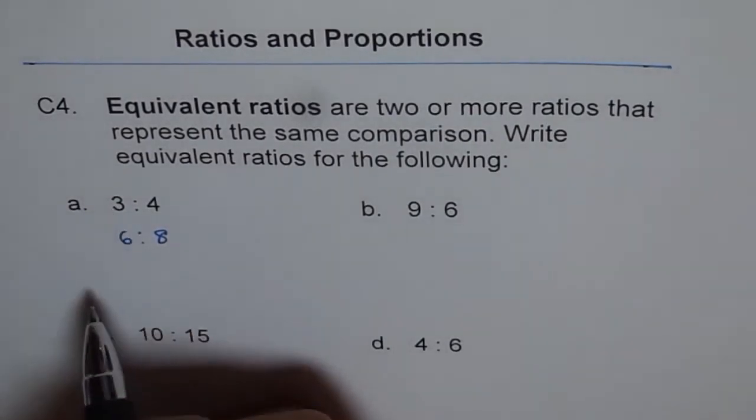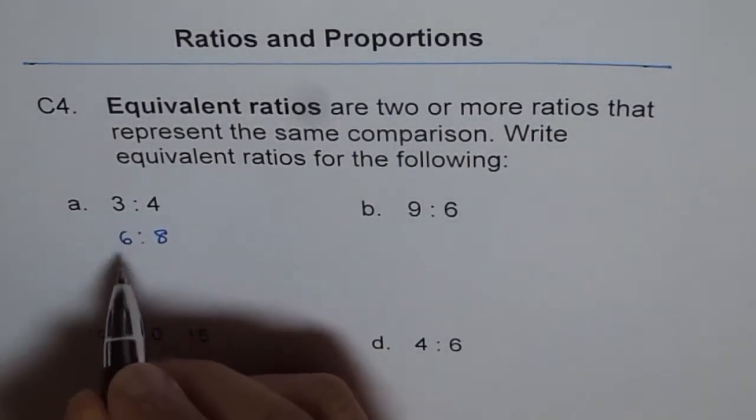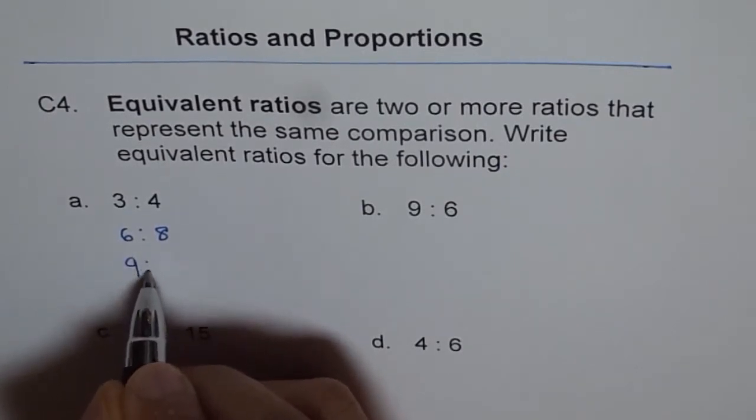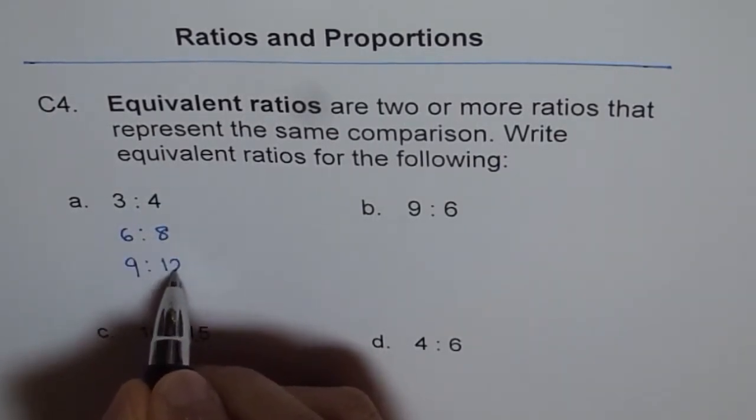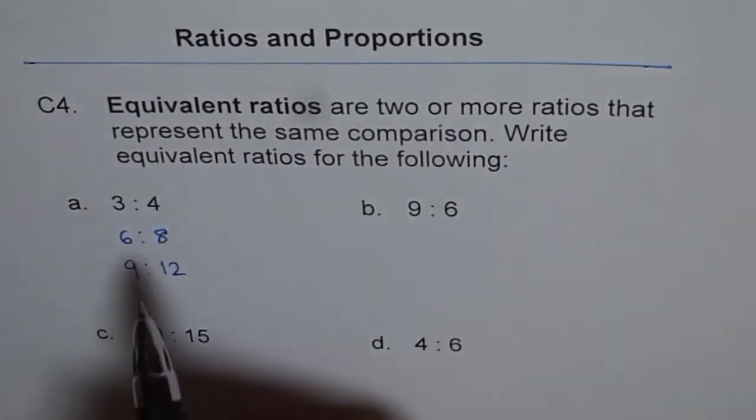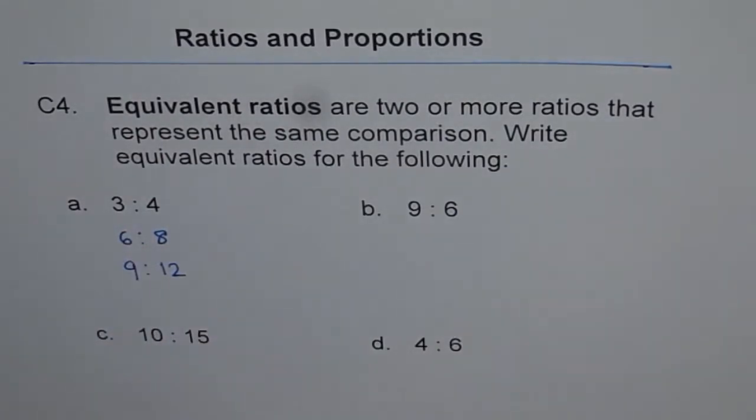You could multiply this by 3 also. So if I multiply this by 3, I get 9 is to, 4 times 3 is 12. So like this, we can get lots of equivalent ratios. There is no limit.